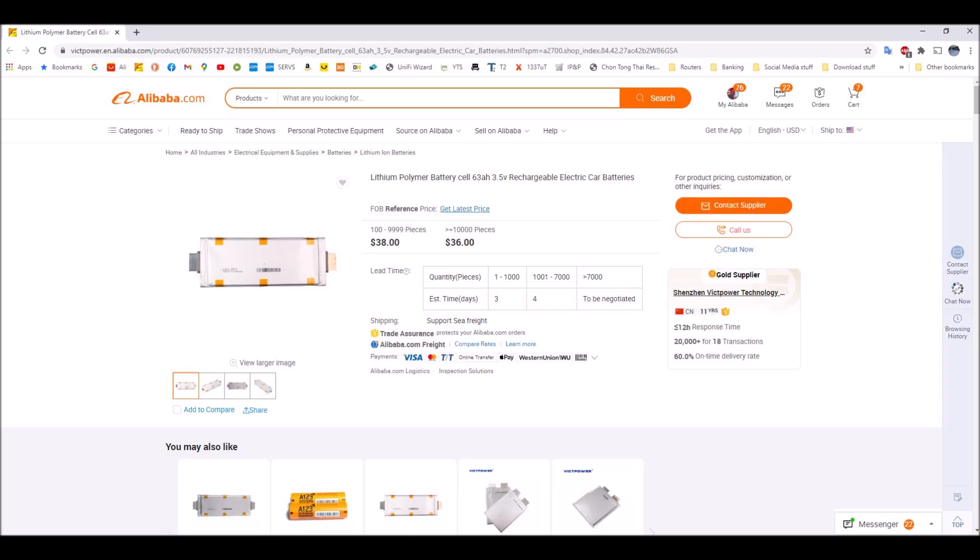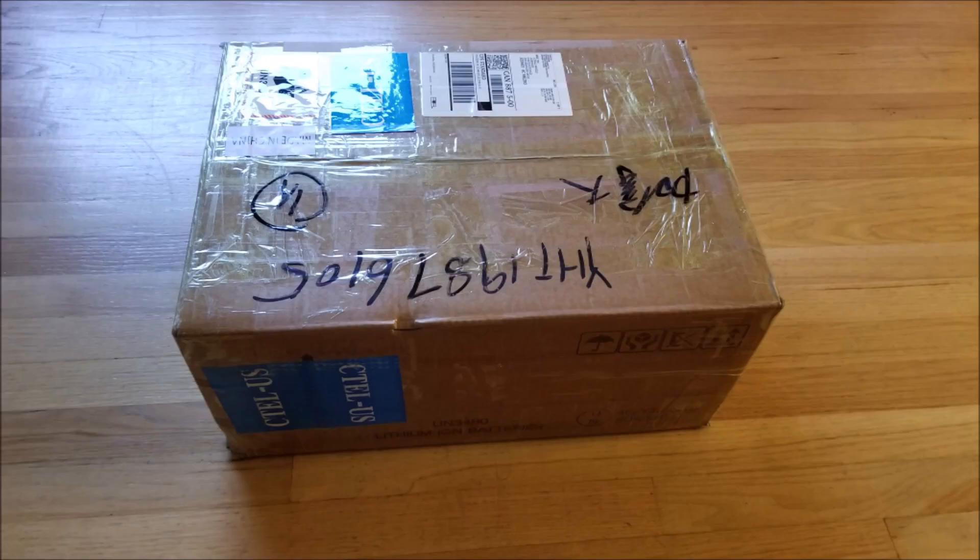In this video, I'm going to show you how I build my batteries using LG Chem's prismatic pouch cells. I bought these cells from an Alibaba merchant called Victpower. I cannot guarantee they are authentic LG Chem cells, but I can tell you they are performing to spec.